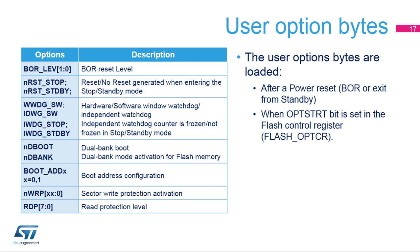Several option bytes are available in the Flash Memory information block to configure specific device features. The option bytes are saved in Flash Memory after programming and loaded after a power or brownout reset, when exiting standby mode, or after option byte programming. Three option bits configure the brownout reset threshold. Two options prohibit or allow stop or standby low-power modes. Four options configure whether watchdogs are enabled by hardware or software, and whether the independent watchdog is frozen in stop and standby modes. Two options enable dual-bank boot mode for supported devices. The boot ADD options work with the boot 0 pin to configure the memory address used for booting. The RDP option byte sets the memory readout protection level.